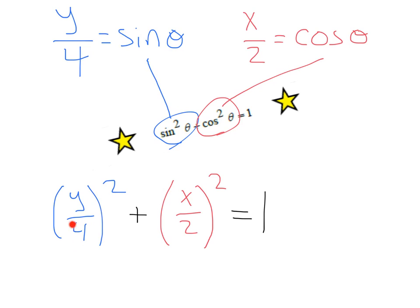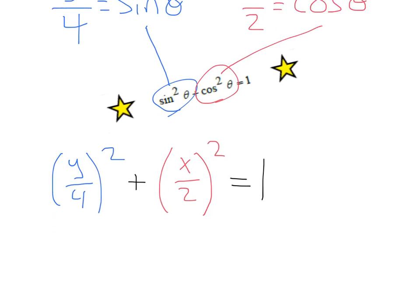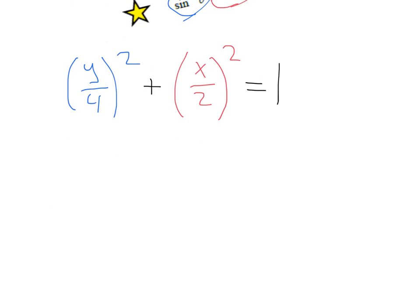Doing that, we're going to get y over 4 squared plus x over 2 squared equals 1. Just plugging these in for sine and cosine. From there, let's go ahead and simplify by squaring those out. That'll give us y squared over 4 plus x squared over 4 equals 1.